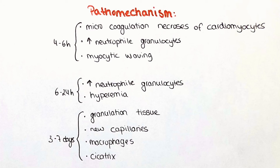After six to 24 hours, we can observe an even more steeply increasing number of neutrophil granulocytes and hyperemia of the tissue. After three to seven days, granulation tissue is starting to form, accompanied by the formation of new capillaries and the initial formation of a cicatrix — the scar tissue which will remain. We will also see infiltration of the area with macrophages.